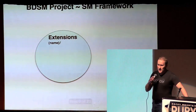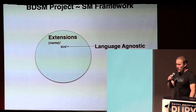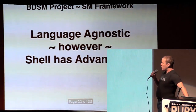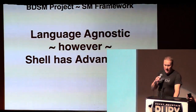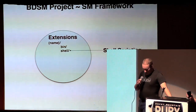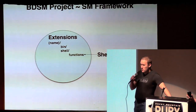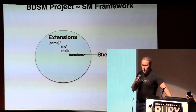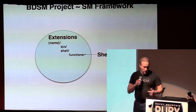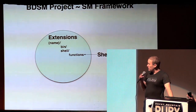So what is an extension? Basically it is a directory — a named directory. It has a bin directory, and you put executable scripts in that bin directory. This means it's actually language agnostic. But doing it in shell has some significant advantages. You make a shell directory inside of your extension, make a functions file in there, and you can put shell scripting functions there. If you add executable shell scripts into your bin directory, they will automatically load in those functions as well as other things.